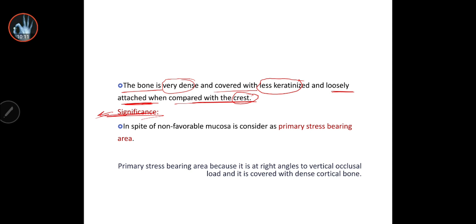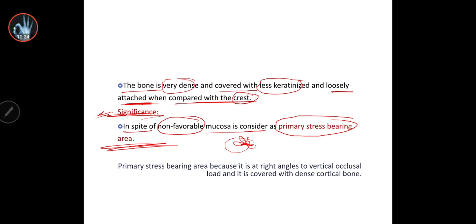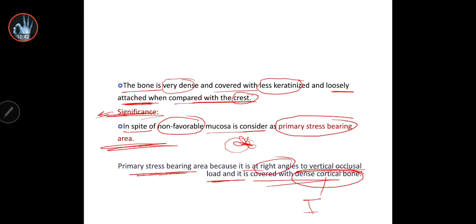The significance of the buccal shelf: despite having non-favorable mucosa, it is considered the primary stress bearing area of the mandible. It is a primary stress bearing area because it is at a right angle to the vertical occlusal loads and is covered by dense cortical bone, which is compact bone that can withstand vertical force.